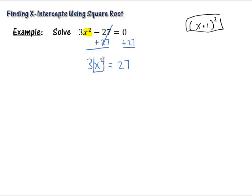Now remember, we're still trying to get this x² part by itself. So since it's multiplied by 3, the inverse of that is dividing by 3. So we'll divide both sides by 3. Those 3's are cancelled and you're left with x² = 27 ÷ 3 = 9.